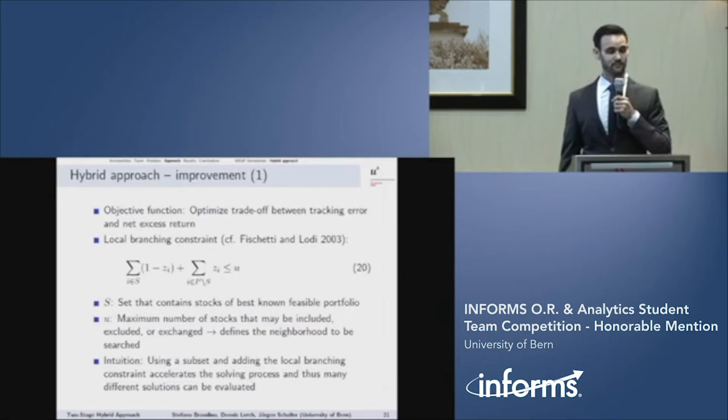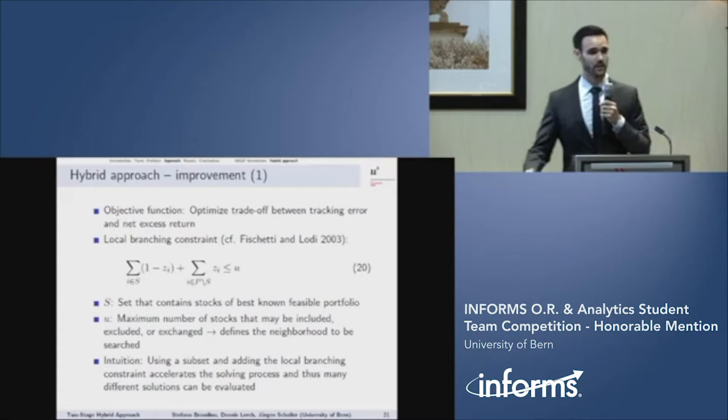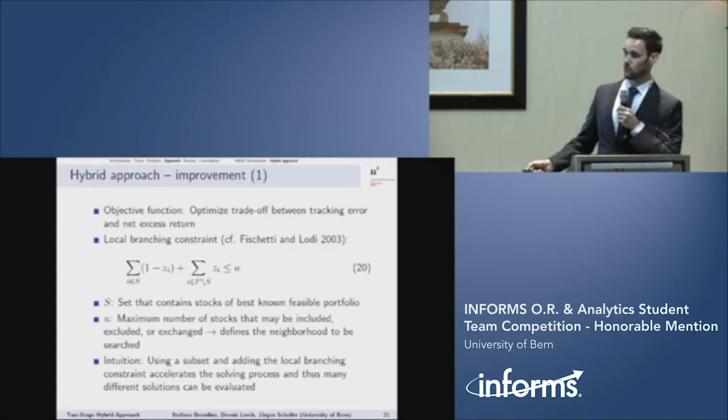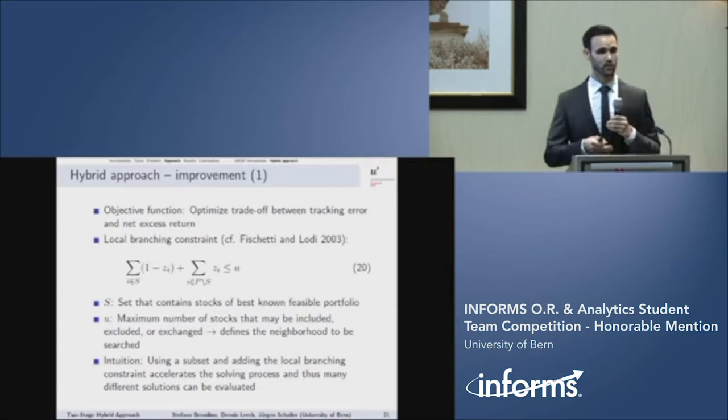In stage two, the objective function is changed back to minimizing the trade-off. Additionally, we include a local branching constraint. The local branching constraint on the left side counts how many stocks may be included, excluded, or exchanged from the best feasible solution. On the right-hand side, there is a limit for these changes, which also determines the neighborhood of the best feasible solution, which the solver can assert for improvement. The intuition about these steps is, by using the local branching constraint and using a subset, we make the problem less complex. And hence, we can accelerate the solving process and the algorithm can evaluate many different solutions.